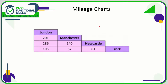Let's take a look at mileage charts. You could get a table where you need to calculate the distance between two cities, and the mileage chart might look a little bit like this. These are quite clever — if you want to work out the distance between London and Newcastle, that's obviously the same as Newcastle to London. Just go down from London and go across from Newcastle and see where they coincide.